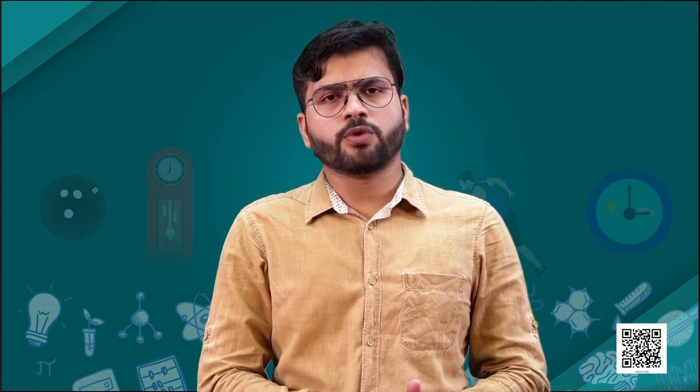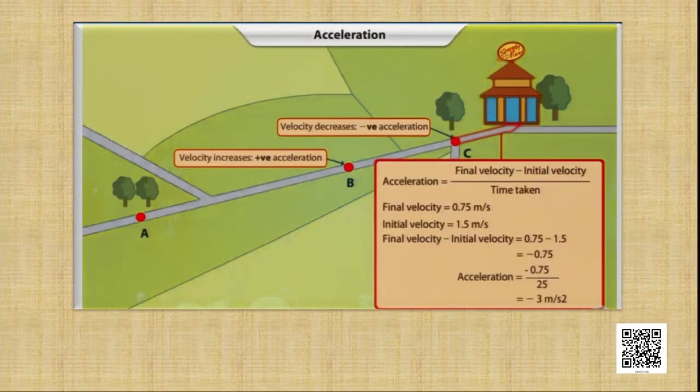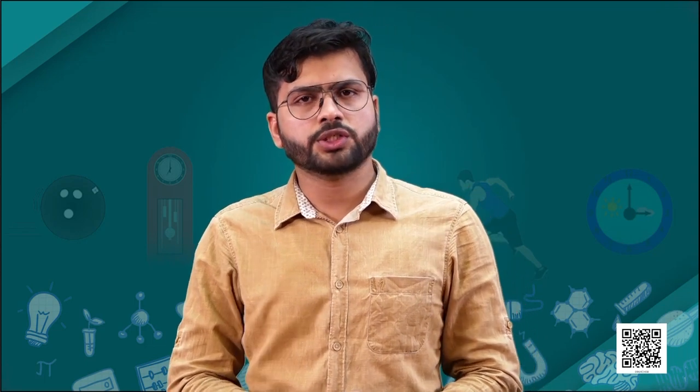In the video, when we start from point A and reach another point B, if the velocity remains the same at both points, then for that duration of time the velocity is constant. As the velocity remains constant, the change in velocity is 0. So if the change in velocity is 0, that means acceleration is 0.